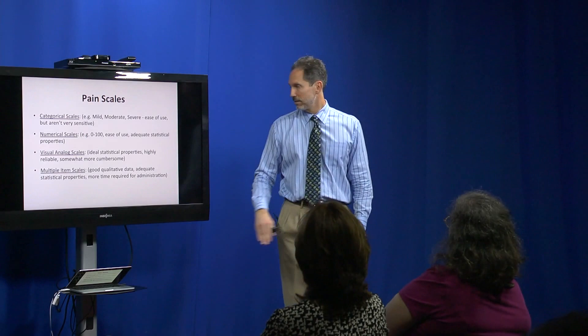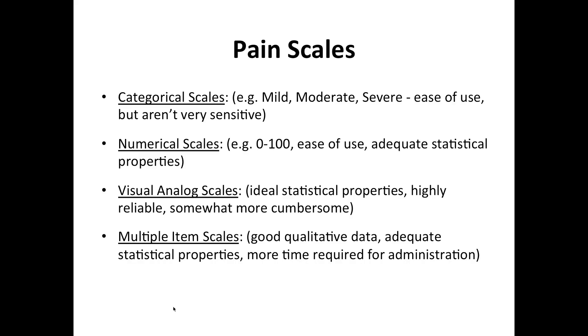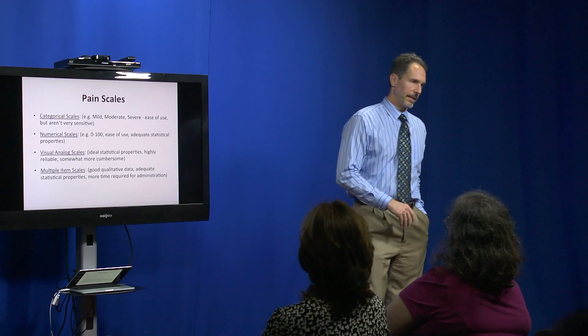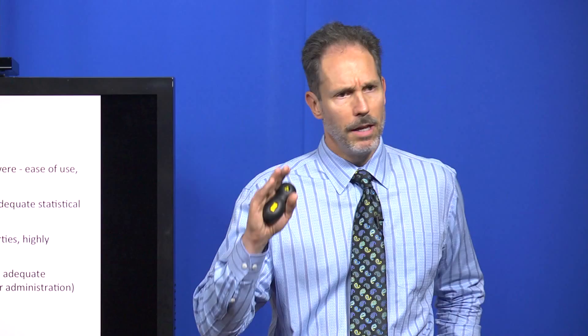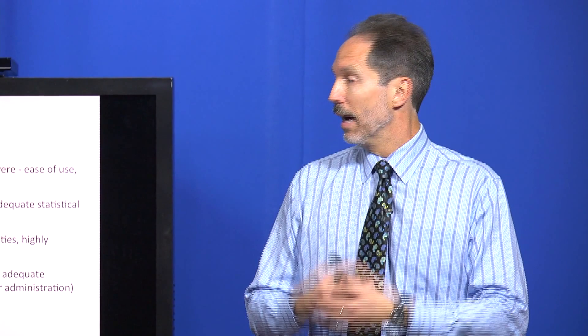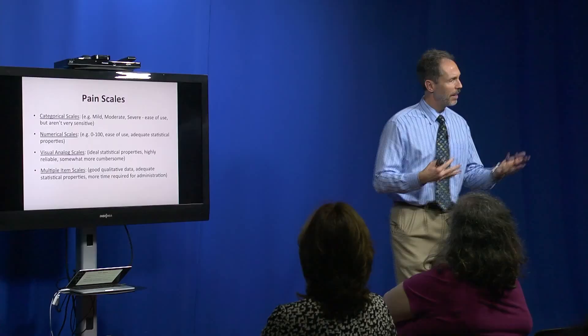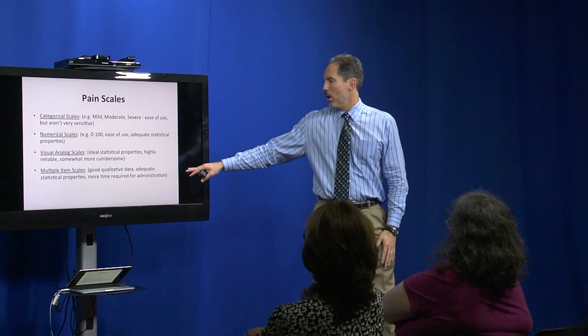There are also multiple-item scales. It may not be enough to know how much pain you're experiencing—I might also need to know what that pain is like. A sharp, shooting pain rated 50 out of 100 might be very different from a dull, aching pain rated 50 out of 100. Getting some information on the quality of the pain can be helpful.